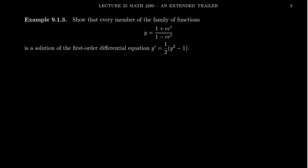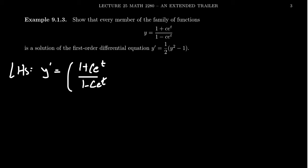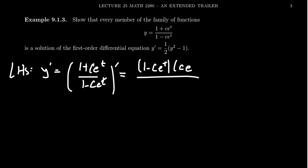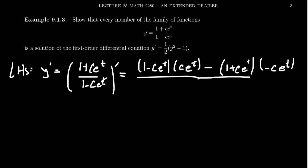The left-hand side: we want to check the derivative of the proposed function, which is 1 plus C e to the T over 1 minus C e to the T. Taking its derivative by the quotient rule — low d-high: the derivative of the top gives us C e to the T — then subtract high d-low: the derivative of the bottom is going to be a negative C e to the T.